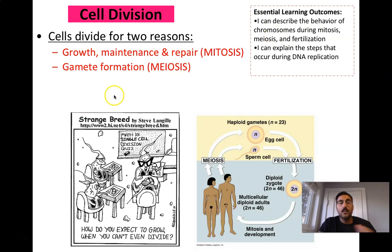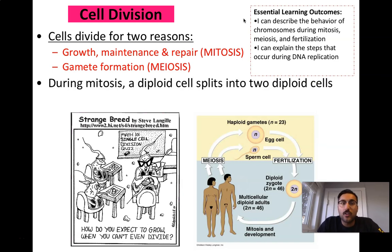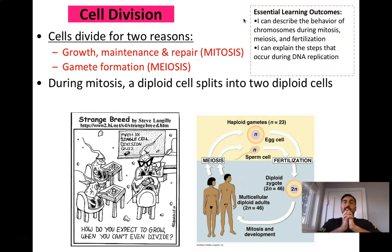Meiosis and mitosis are very different in function, but their processes are a little similar at first. So during mitosis, a diploid cell — a 2N cell, two copies of each, 46 total in humans, 23 from mom and 23 from dad — that diploid 46-chromosome cell is going to split into two brand new 46-chromosome cells.